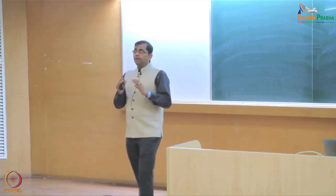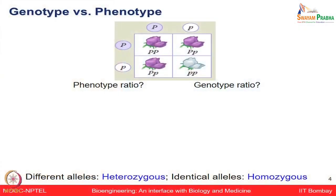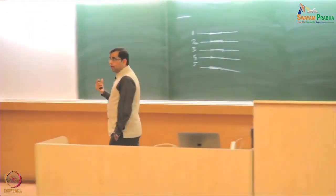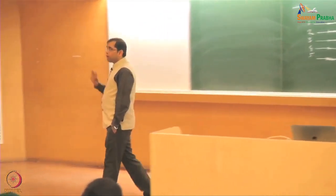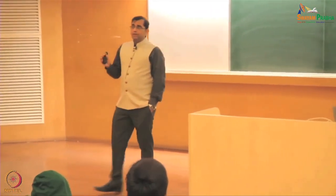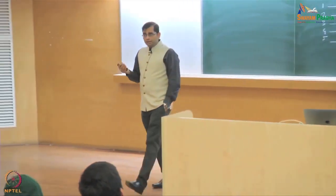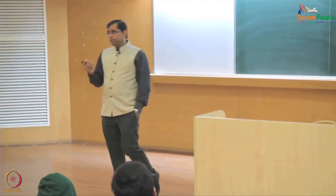One gene might have different allelic forms. For example, here is a flower which is purple colored. If a gene codes for it and is dominant, we call it capital P. A recessive form of that will be small p. I want to make you familiar with the terminologies: dominant, recessive, homozygous, heterozygous.